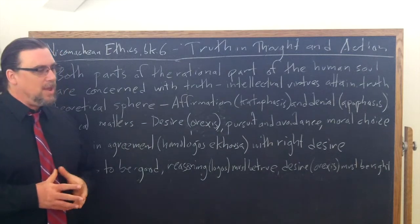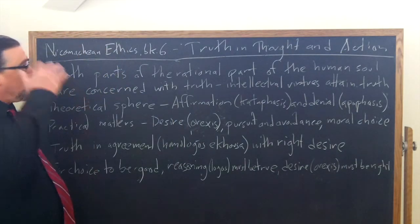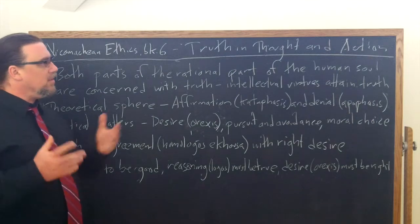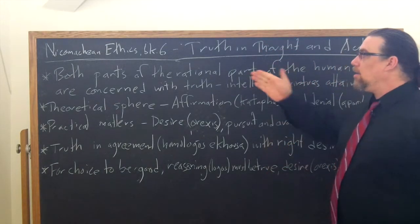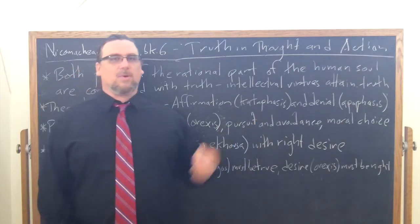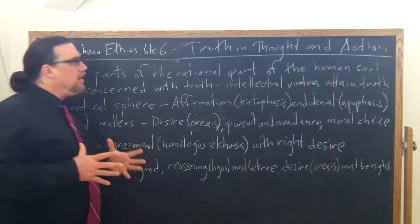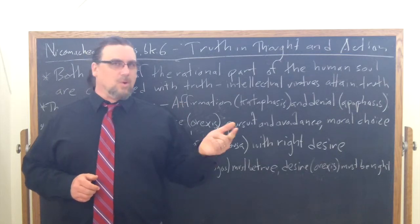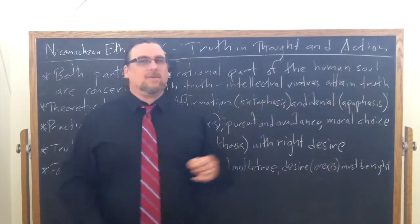If you want to go further into this, you would also want to look at the On the Soul, where he discusses these topics in similar ways as well. Aristotle says that both parts of the rational part of the human soul — the part concerned with dianoia, the intellectual or reasoning part — are concerned with truth. The term for truth there is aletheia, the same term he uses throughout his work for being in accordance with truth. And he says that the intellectual virtues — wisdom, intellect or nous, scientific knowledge, but also craft, technique, and phronesis — are ways of attaining truth.